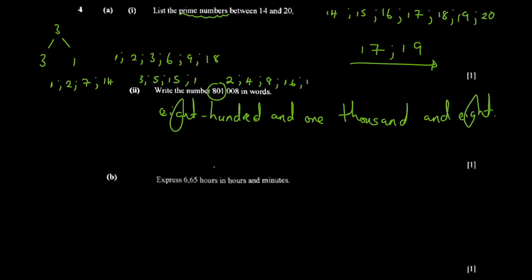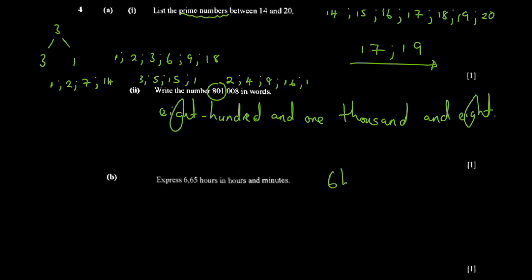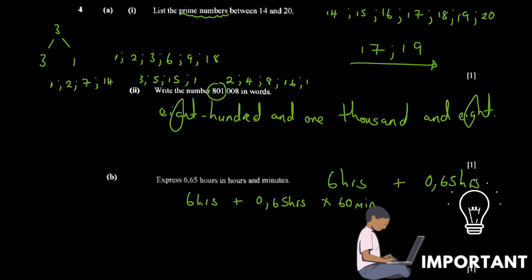Part b says: express 6.65 hours in hours and minutes. Obviously it's six hours and something, so you write it as six hours plus 0.65 hours. The 0.65 hours is what you want to convert to minutes. Your conversion factor is 60 minutes per hour, since there are 60 minutes in an hour.